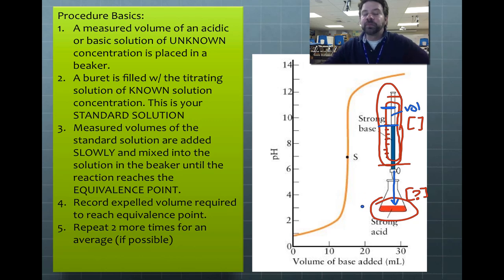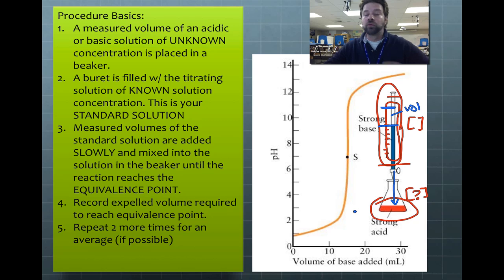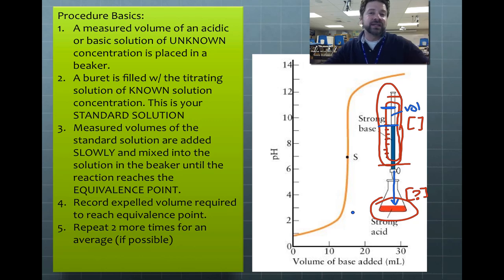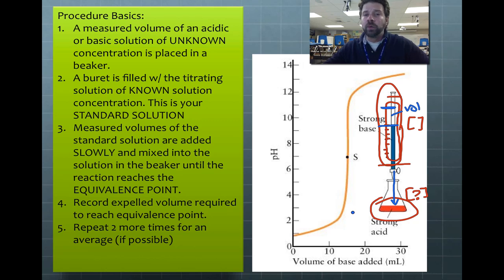One additional tip: before doing your careful triplicate runs, do a quick preliminary rough run first. Add solution quickly, and the moment you see the color change, stop the valve and note how much it took. That gives you a ballpark so you know when to slow down in the real runs, making your titrations faster and more efficient.